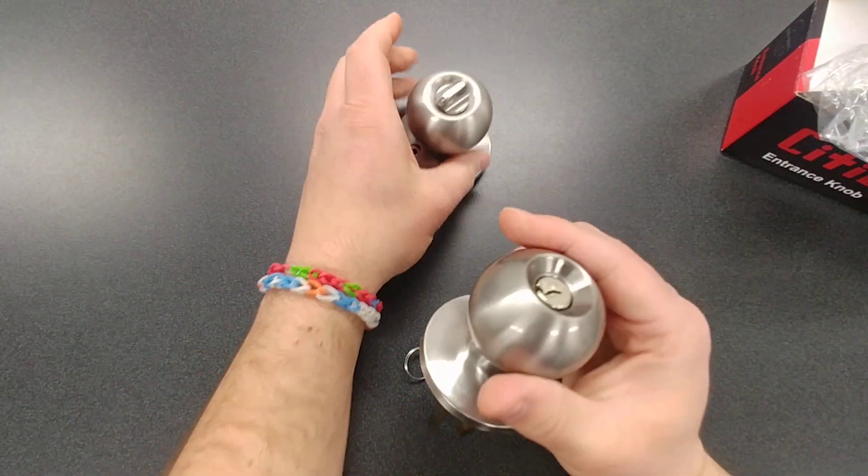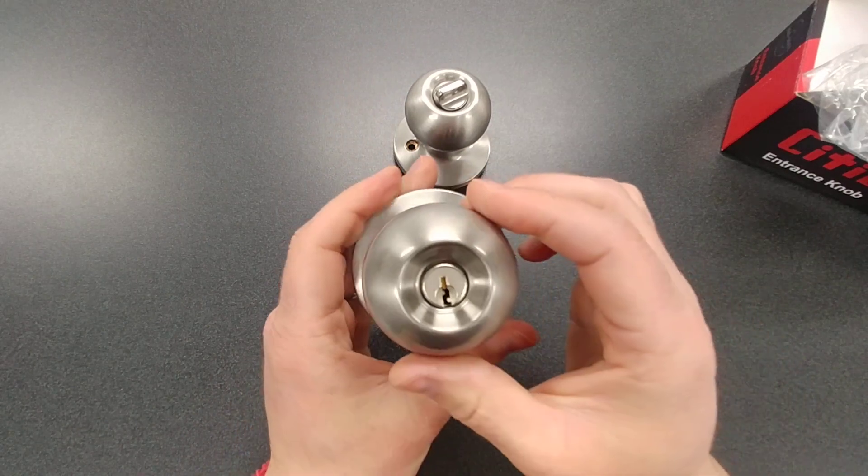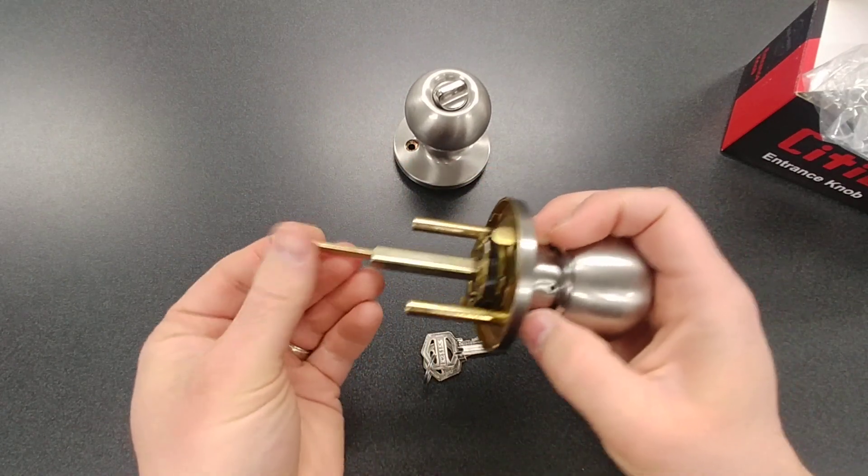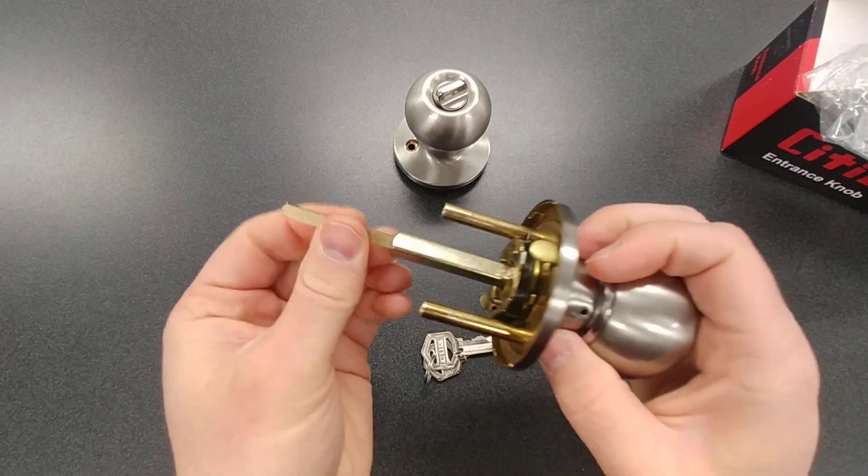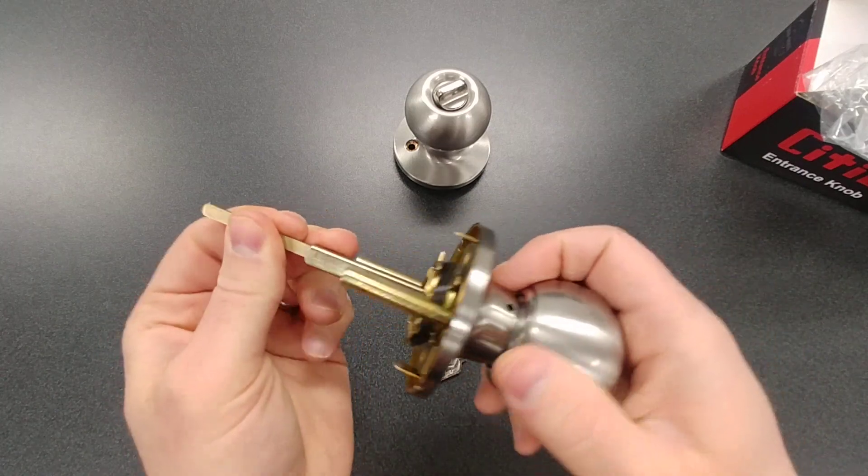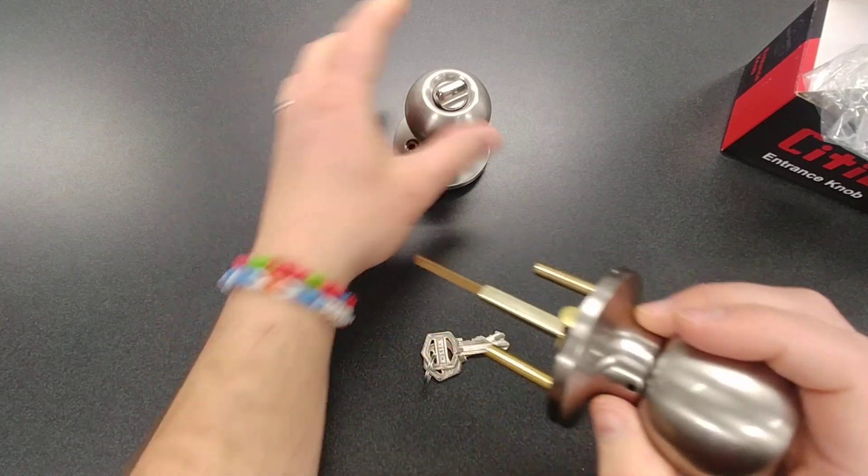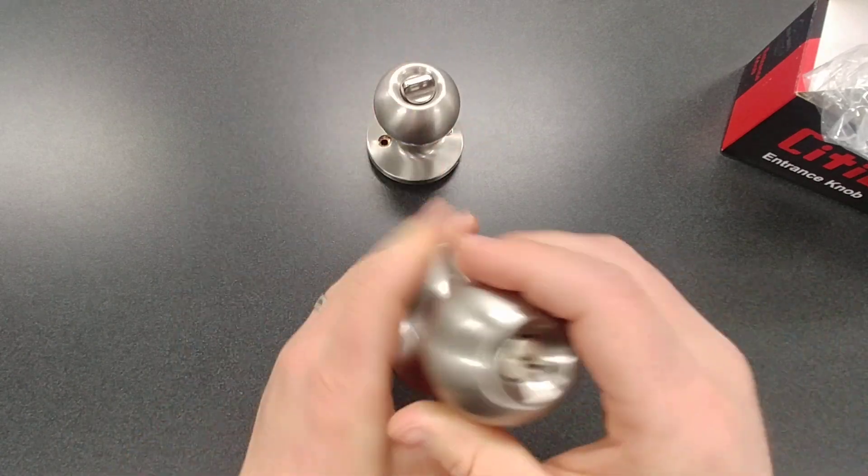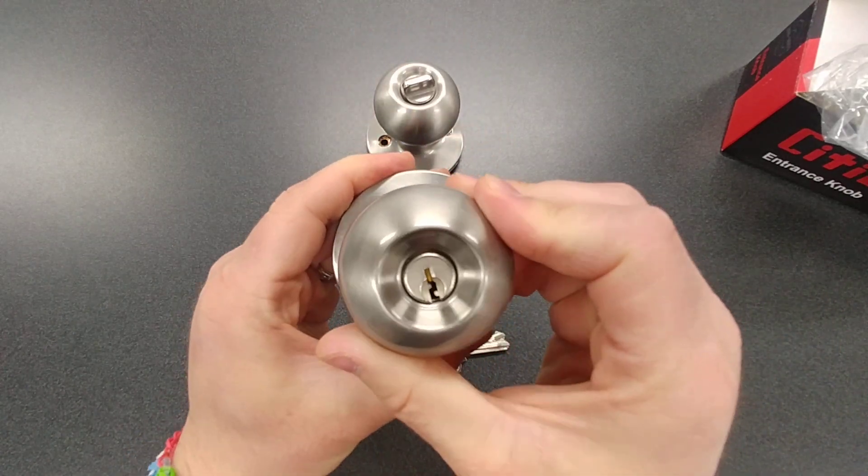Now, when you go to re-key these, you have to always make sure that this knob is unlocked. So when it's locked, I'm just twisting this here—this is the exact same as if we were using this tailpiece—it's going to be nice and locked.